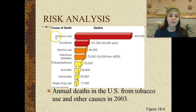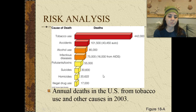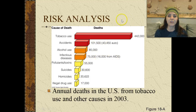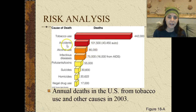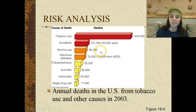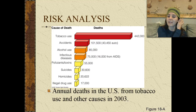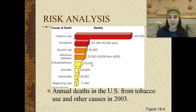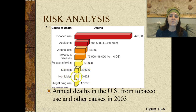This chart shows annual deaths in the United States from various causes in 2003. Almost half a million people died because of tobacco use. About 100,000 died from accidents, 43,000 of those being automobile accidents. Alcohol use accounted for 85,000 deaths, infectious diseases about 75,000 (16,000 from AIDS), pollutants or toxins killed 55,000, suicides were at 31,000, homicides about 21,000, and illegal drug use around 17,000.